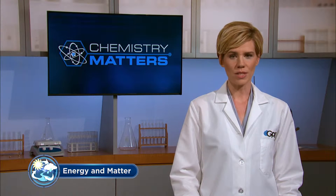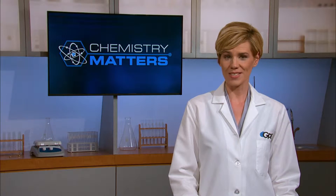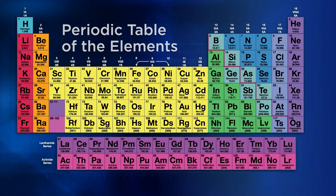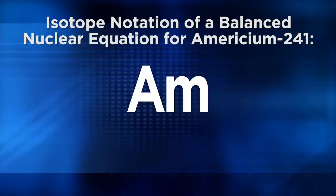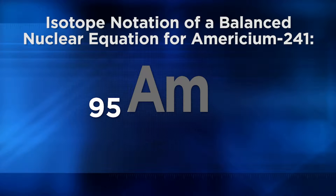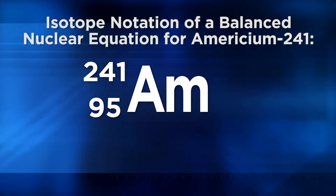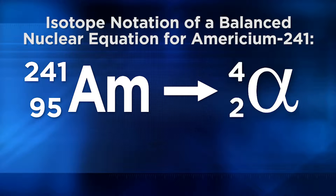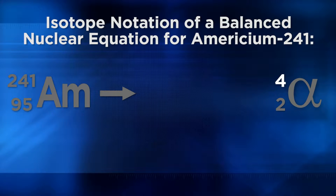Now let's use isotope notation to write a balanced nuclear equation. A radioactive material probably in the room with you right now is americium-241, found in common household smoke detectors. To write the isotope notation for americium-241, find the element symbol AM on the periodic table, write its atomic number 95 on the lower left, and write 241 as the mass number on the upper left. When americium-241 undergoes alpha decay, it releases an alpha particle — composed of two protons and two neutrons — with a mass number of 4 and an atomic number of 2.